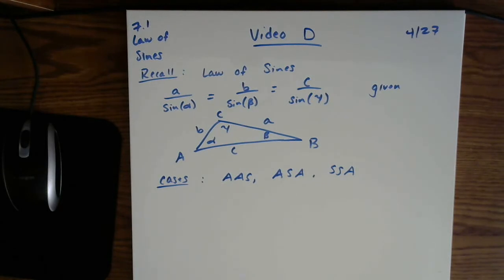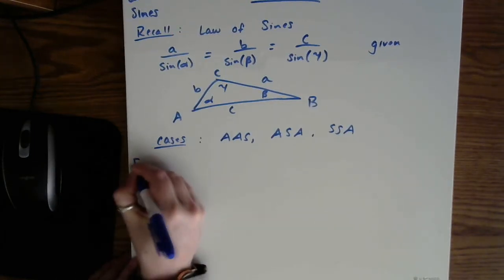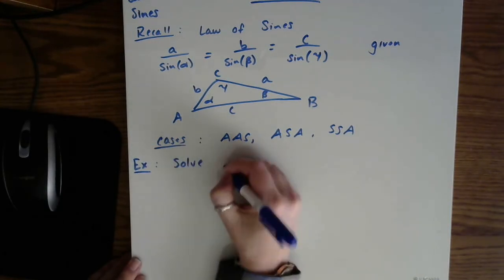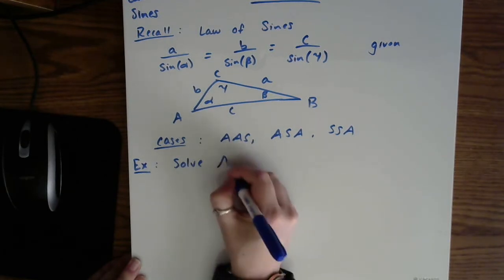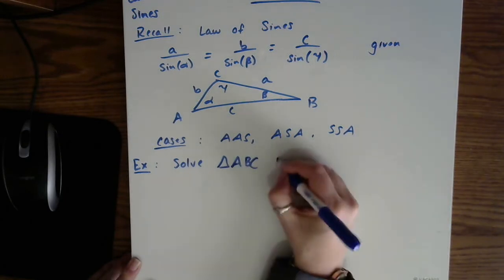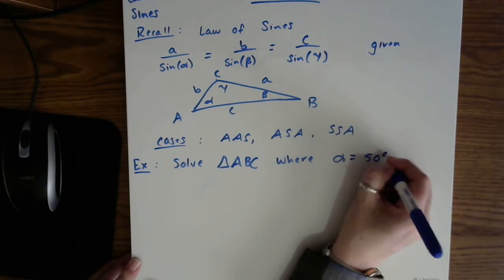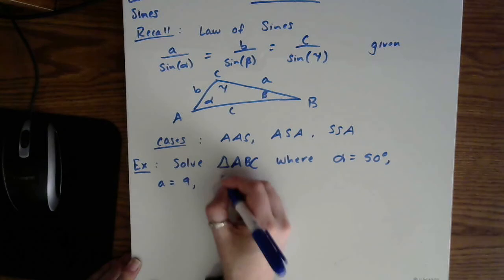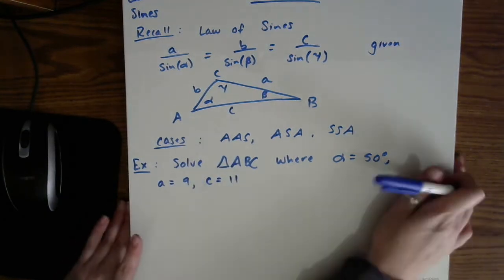We'll do a couple of special cases today. So let's just jump right in and remember the directions, solve the triangle. And in this case, we're calling it the ABC triangle. So triangle ABC, where we know for this example, alpha is 50 degrees, a is 9 units, and c is 11 units.